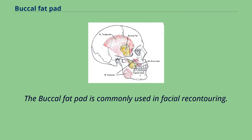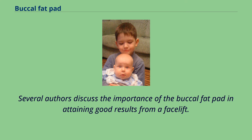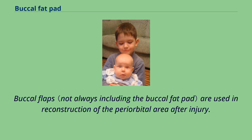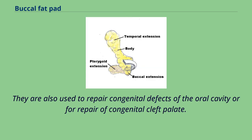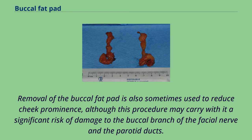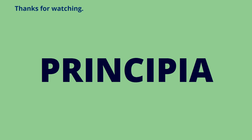The buccal fat pad is commonly used in facial recontouring. Several authors discuss the importance of the buccal fat pad in attaining good results from a facelift. Buccal flaps are used in reconstruction of the periorbital area after injury, and also to repair congenital defects of the oral cavity or congenital cleft palate. Removal of the buccal fat pad is also sometimes used to reduce cheek prominence, although this procedure may carry a significant risk of damage to the buccal branch of the facial nerve and the parotid ducts.